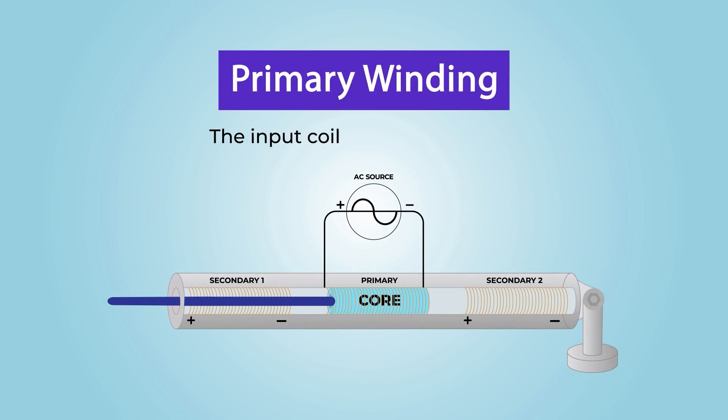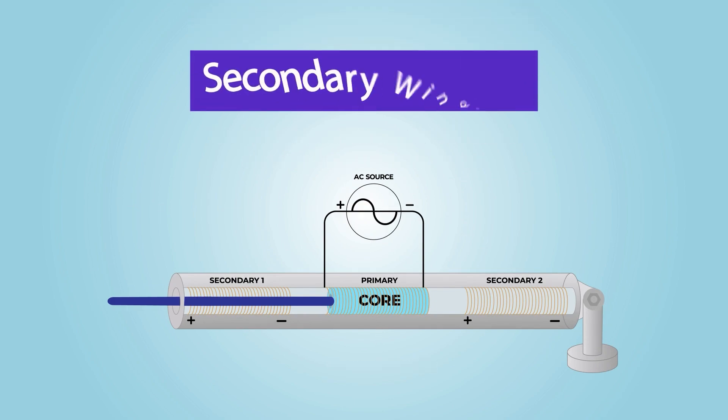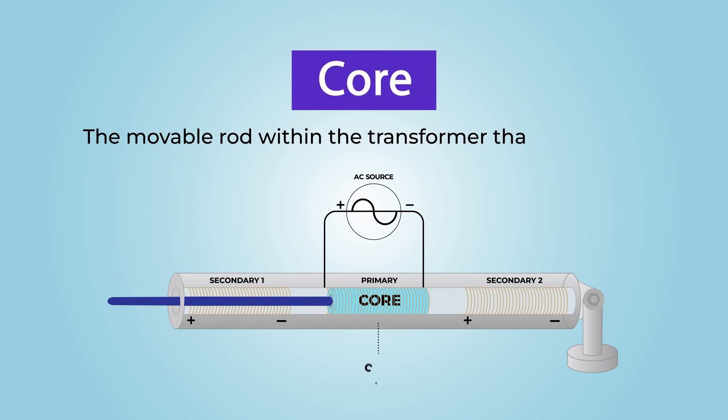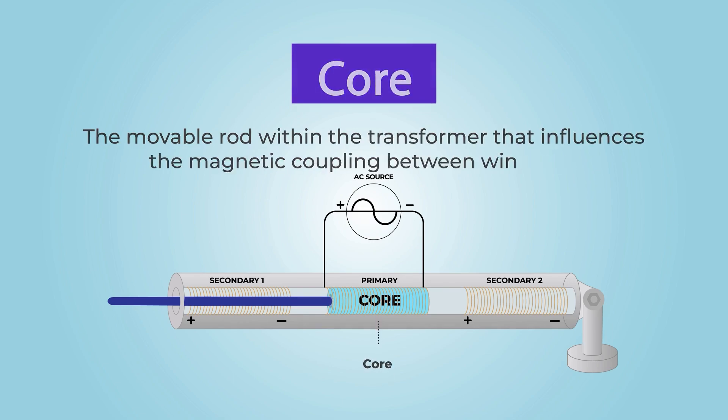The primary winding is the input coil through which an alternating current flows. The secondary windings are two output coils wound in opposite directions to each other. The core is the movable rod within the transformer that influences the magnetic coupling between windings.